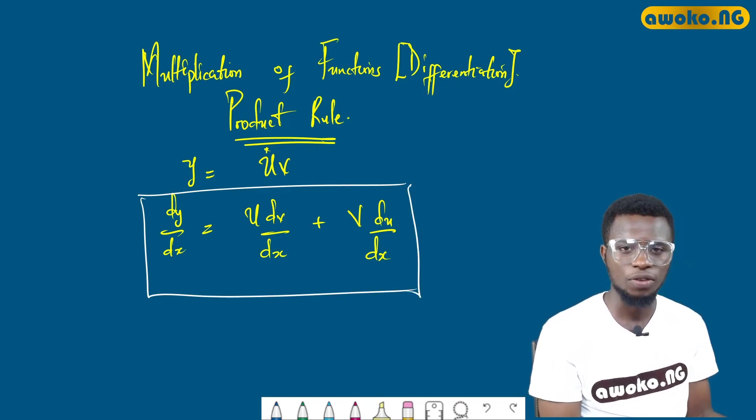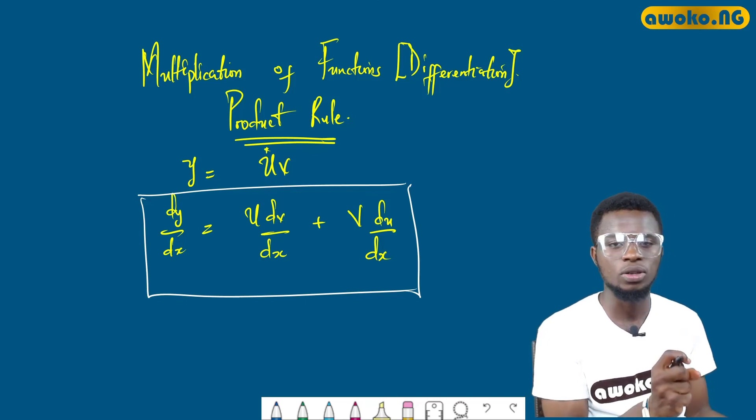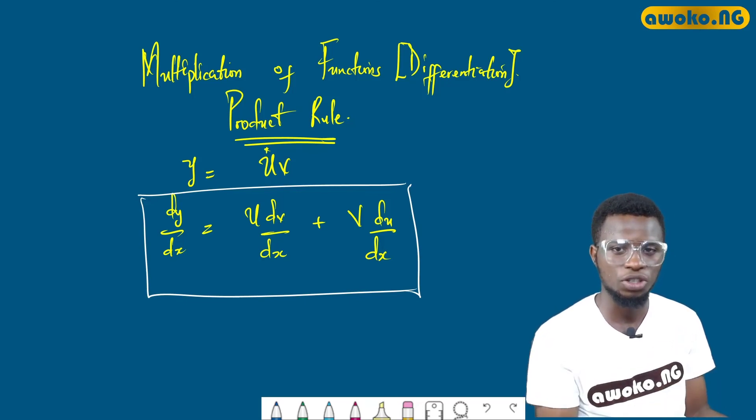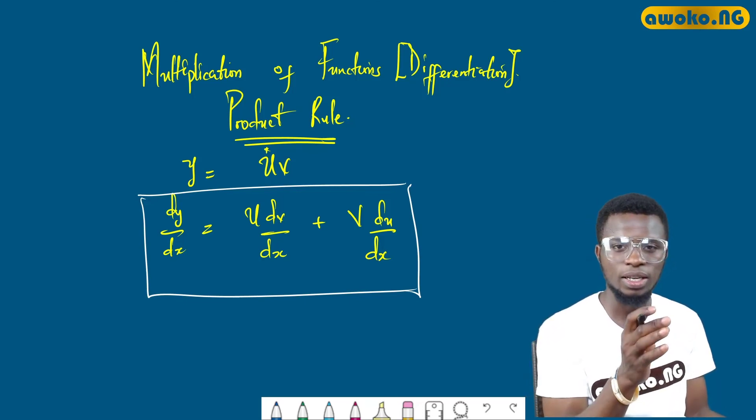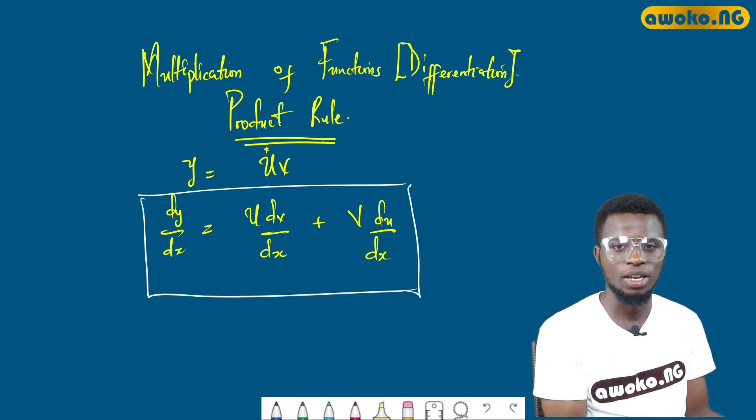So in a nutshell, when we are asked to find the product rule, what we are asking you is to keep one term constant and differentiate the other, and keep the other constant and differentiate the first. In our next class, we will discuss examples on how to apply the product rule. So see you in our next class.